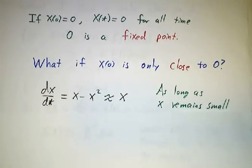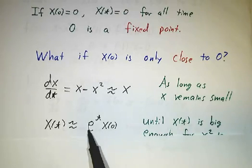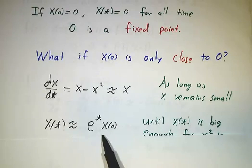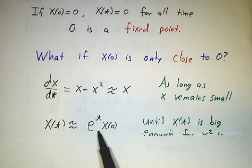And of course, we know what the solutions are to dx/dt = x. The solution is e^t times whatever value we started with. So if you start off with 0.001, you wind up with 0.001e^t for a while.